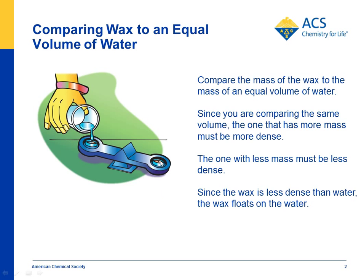If you put a tea light candle in its little aluminum container on one side of the balance, take the candle out and just have the container on the other side — you'll have equal volumes. Fill this container with water, so you're comparing a volume of water to an equal volume of wax. You'll see that the water weighs more than an equal volume of wax. Therefore, water must be more dense, because density is mass per unit volume — if you compare the same volume, the one that's more massive must be more dense.